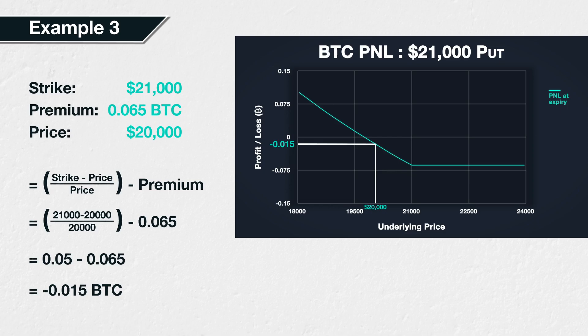This highlights why it is not enough for the price to simply move below the strike price. For the put option to make any profit at expiry, the price also needs to move far enough to compensate for the premium paid — in other words, to the breakeven point, which we will calculate later in section 6.